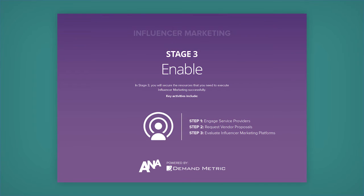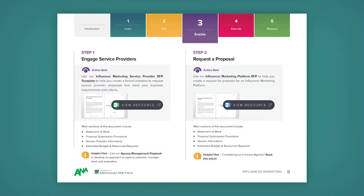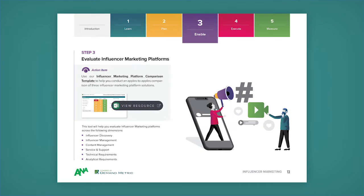In stage three, we're going to help you enable your program. In here, your first step is to engage service providers. Step two is to request a proposal, and then you're going to evaluate influencer marketing programs.